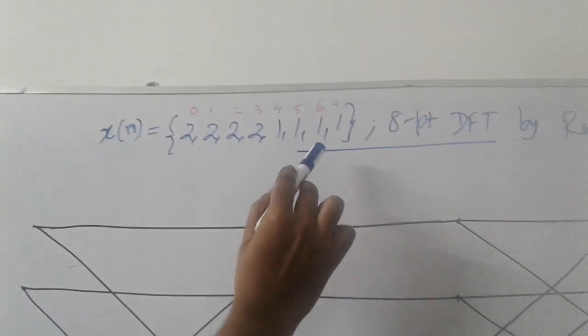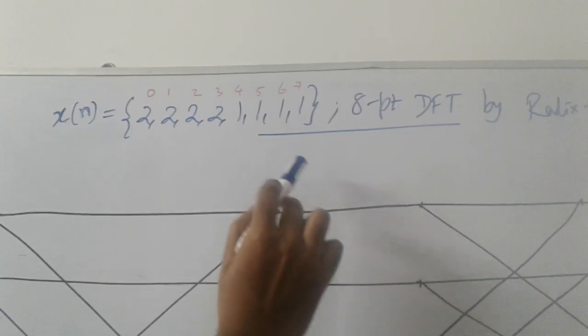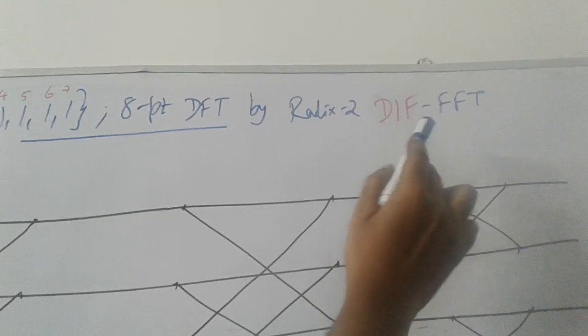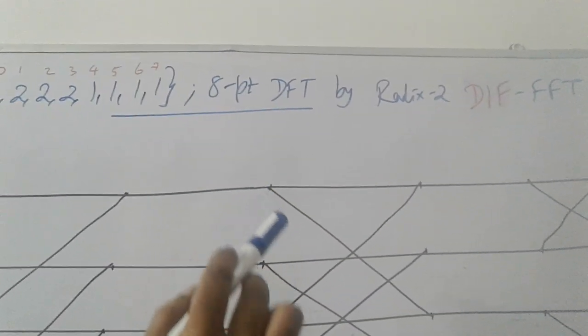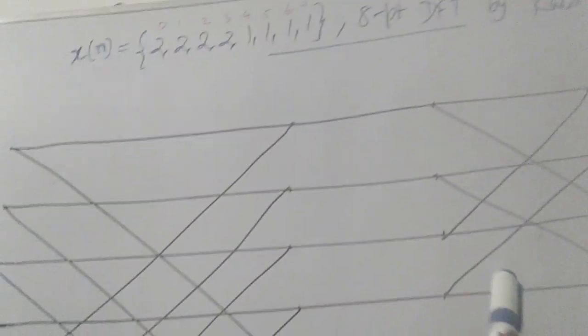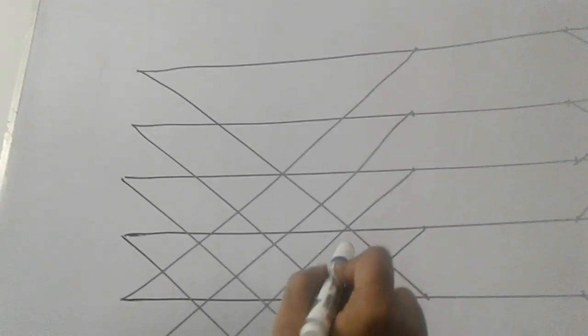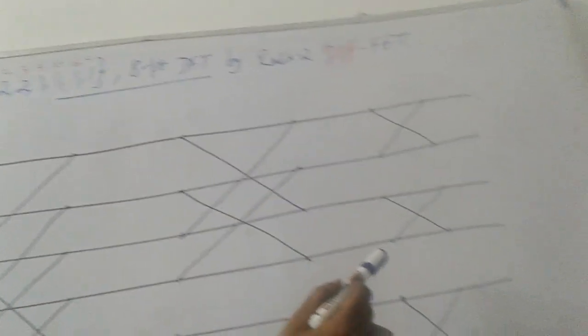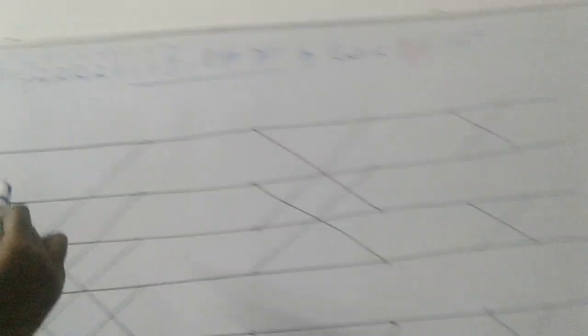The input is four 2's followed by four 1's. We are going to solve this eight-point DFT by Radix-2 DIF FFT. In decimation in frequency, it is just a reverse of decimation in time. In decimation in time it was two-point, four-point, eight-point. But in decimation in frequency it is eight-point, four-point, and two-point DFT.